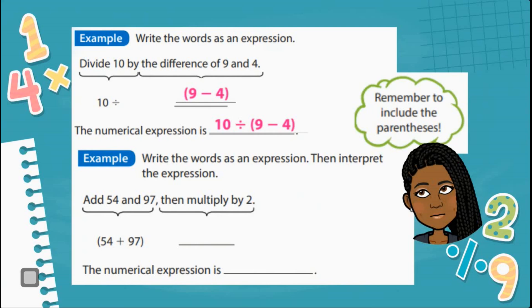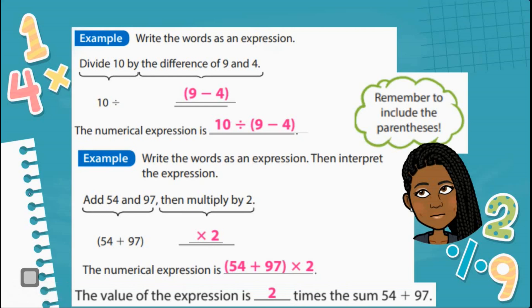Let's look at this example. Write the words as an expression, then interpret the expression. They want you to then solve it. It says add 54 and 97, then multiply by 2. So they're telling us exactly what to do. So 54 plus 97 then multiply by 2. That's it. So your numerical expression is 54 plus 97 in parentheses multiplied by 2. Because it tells us exactly what to do. You see this? Then, right? That's telling us in sequence how to do something. So we do this first and we do this next. The value of the expression is 2 times the sum, 54 plus 97. Because we would get the sum here and then we would basically double it or multiply it by 2.